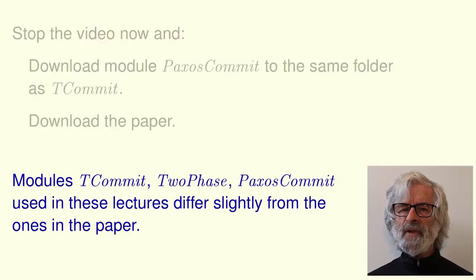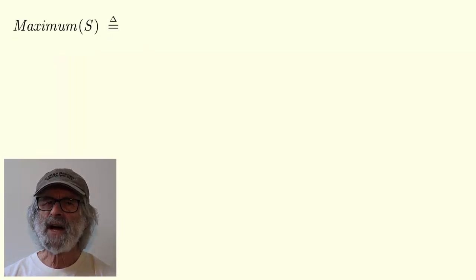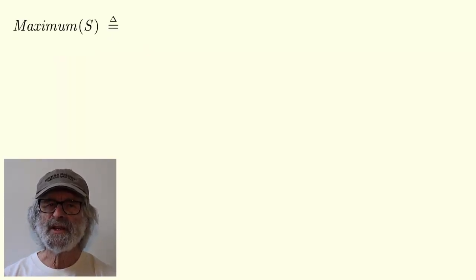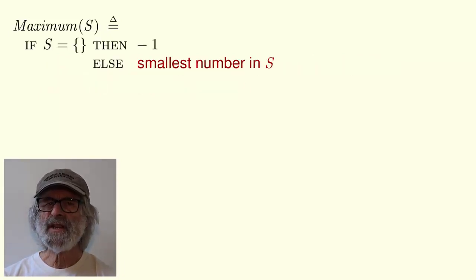The module Paxos commit that we use here, as well as modules T commit and T phase used in previous lectures, differ slightly from the ones in the paper. The module begins with an extends statement that imports the definition of arithmetic operators from the standard integers module. The module then defines maximum of S to be the largest element of S if S is a finite set of integers and to equal minus 1 if it's the empty set.